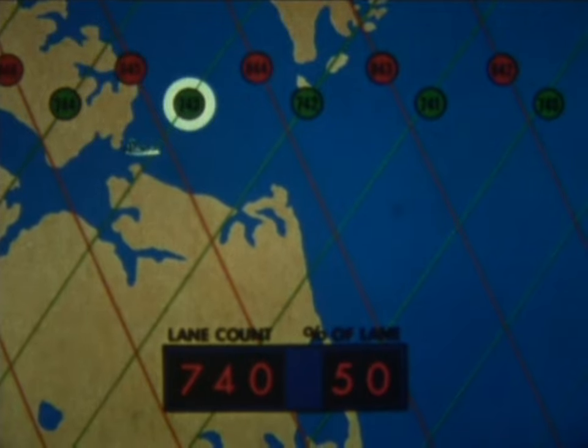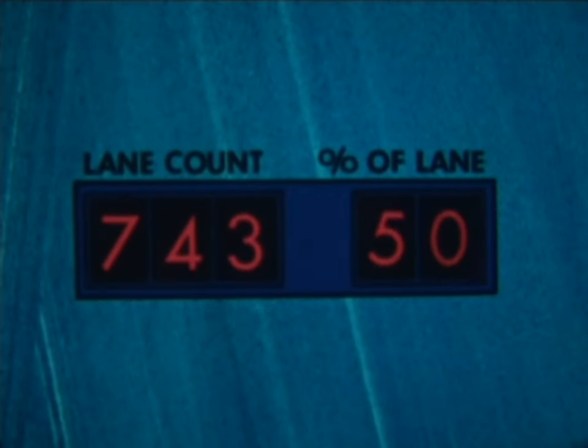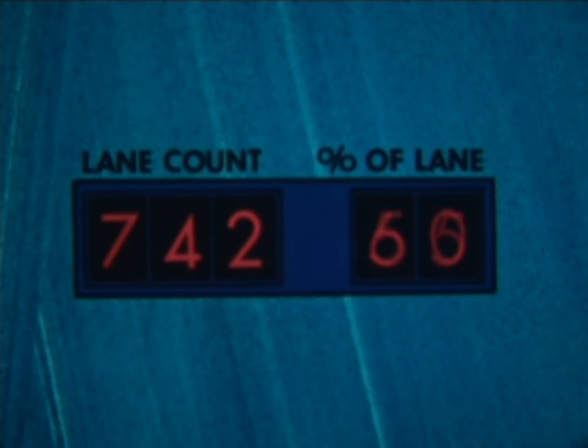This is easy to do at the beginning of a voyage when a ship is generally at a location where its position can be accurately established. An omega chart also gives the lanes in which the position is fixed, and with this information, we can initialize the receiver. The lane counters are set to the lane numbers taken from the chart. There's no need to adjust the percent of lane indicator because this sets itself automatically.